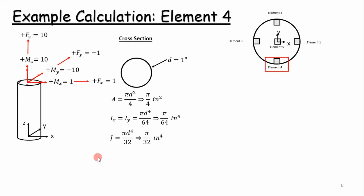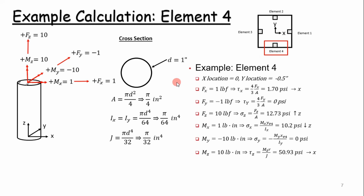Now we're going to perform an example calculation on element four to make sure we have everything locked down and correct. Given these forces and moments, we're going to determine the stresses at element four on this stress element. The first thing we want to do is calculate our geometric properties such as area, area moment of inertia, and polar moment of inertia, given by these equations. We're assuming a shaft with a diameter of one inch to make the calculations straightforward. Next, we apply the stress equations identified for element four, showing which direction they act — whether in the positive x direction, positive z direction, negative z, or negative x — and run these calculations.